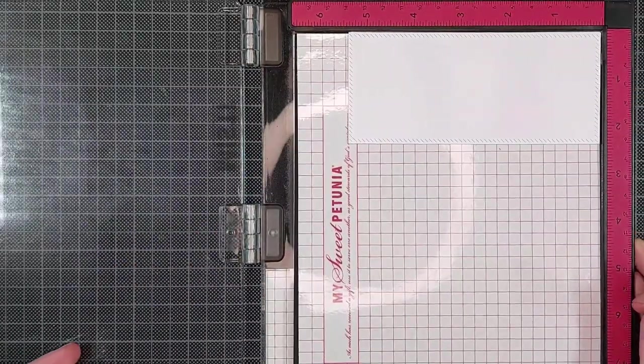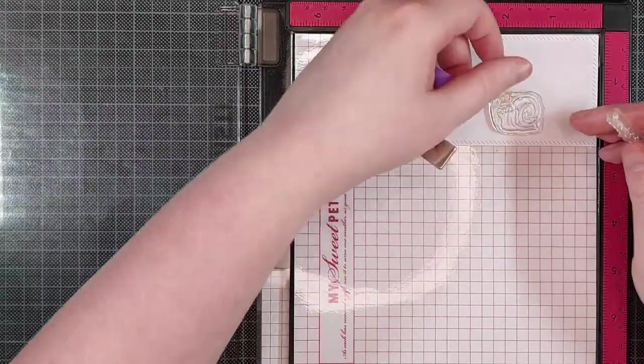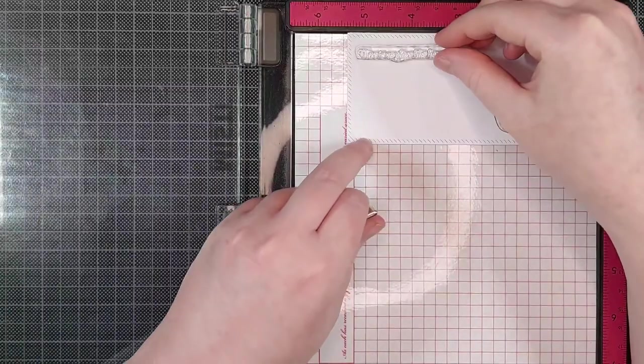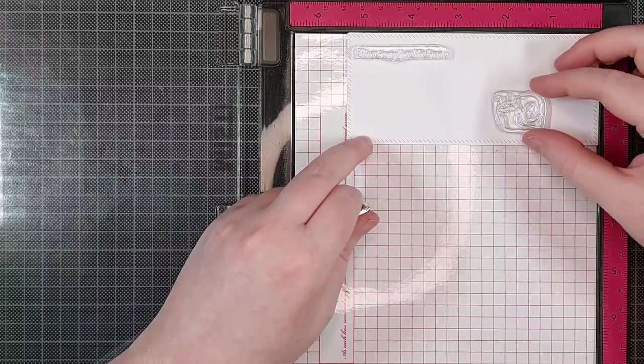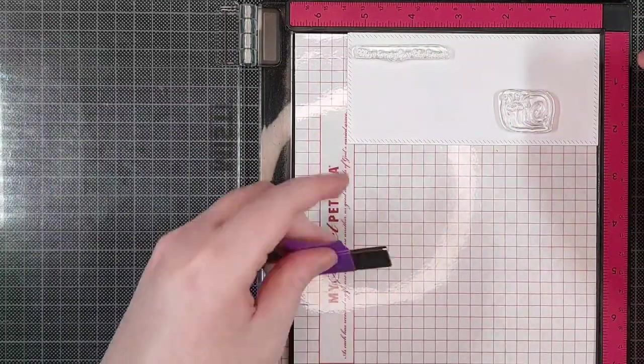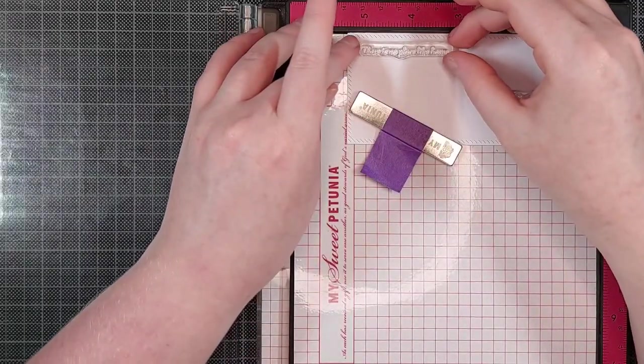Once again I'm using my Trusty Misty to stamp out this really simple image. I'm also using a sentiment stamp from the Home is Where the Heart is stamp set also by Crafty Meraki.